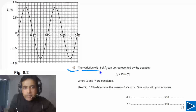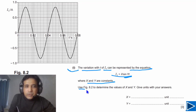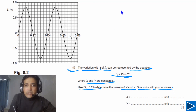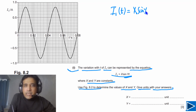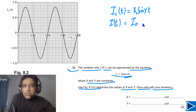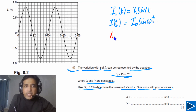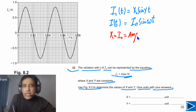For Part B1, the variation with T of I1 is represented by the equation I1 = X sin(YT), where X and Y are constants. We need to use figure 8.2 to determine the values of X and Y. Comparing with the general equation I = I₀ sin(ωt), X corresponds to I₀ — the amplitude, or maximum value of current. From the graph, the amplitude is 0.85, so X = 0.85 A.